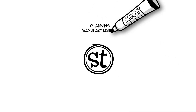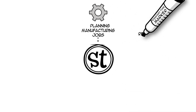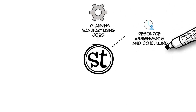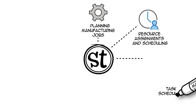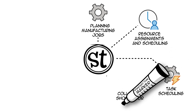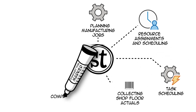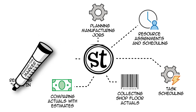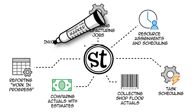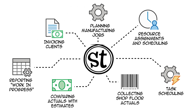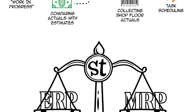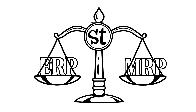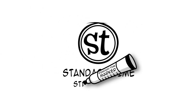Standard Time helps with planning manufacturing jobs, resource assignments and scheduling, task scheduling, collecting shop floor actuals, comparing actuals with estimates, reporting work in progress, and invoicing clients. So what do you think — ERP, MRP, or just a really good manufacturing app?